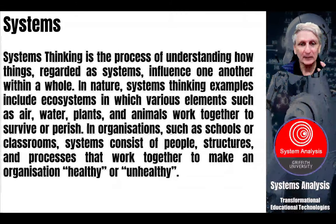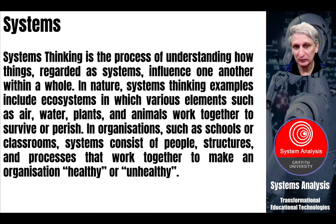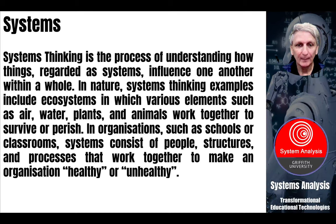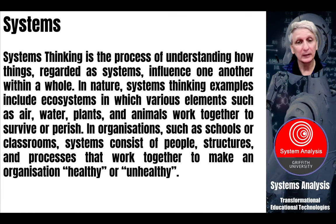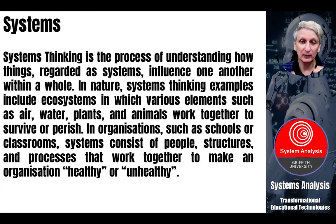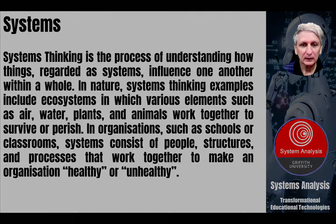In systems thinking, we go through a process of trying to understand things regarded as systems and how they influence one another within the whole. In nature, we see lots of systems: ecosystems, weather systems, the climate system — and these all have complex interactions. They generally produce some sort of output, and we can call systems being healthy or unhealthy. Are they working in a harmonious, balanced way? Or are they working in an unbalanced, unhealthy way, in which certain parts of the system are in crisis and in states of destruction?